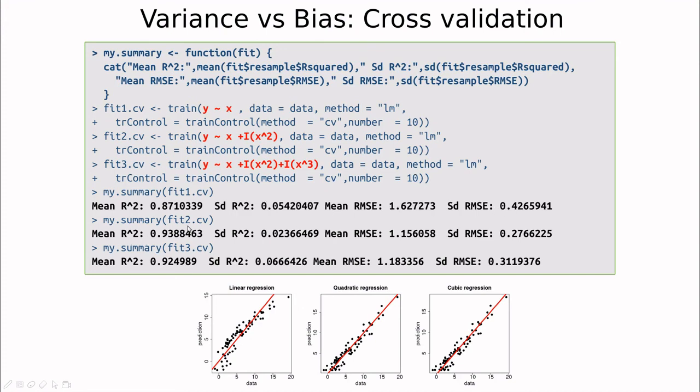What about the quadratic case? In this case, you can see that r squared, the mean value is the highest, and the standard deviation is the lowest. This is related to the low variance stuff. Okay, and what about the cubic? Again, r squared is almost like this one, but you have more variance here, and also you have more variance also in the root mean square error.